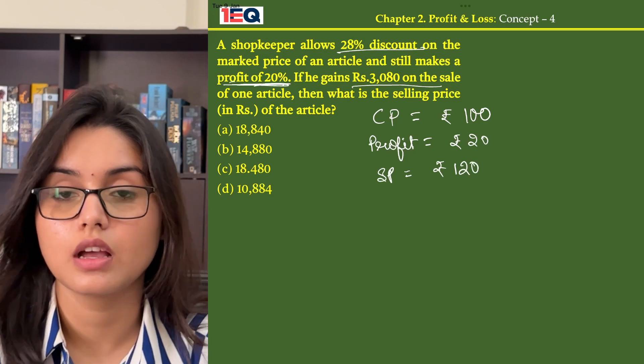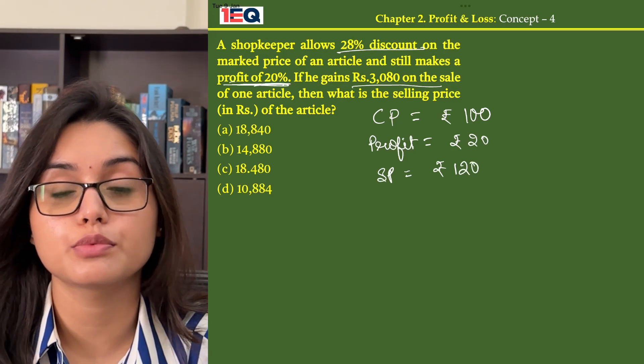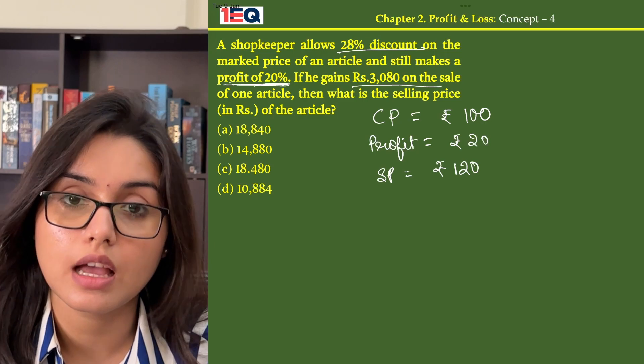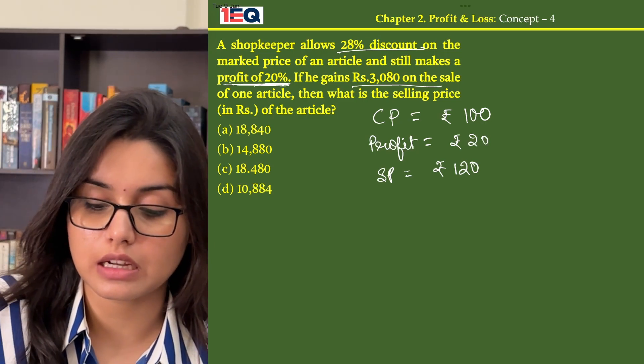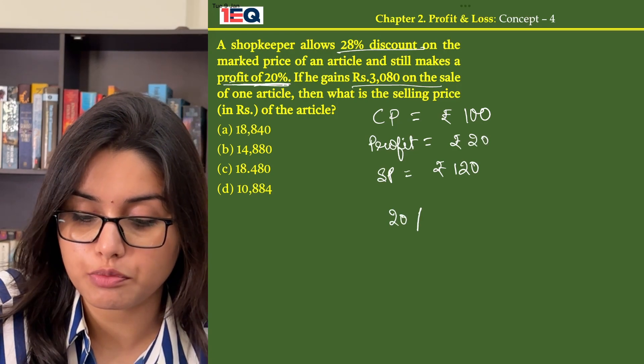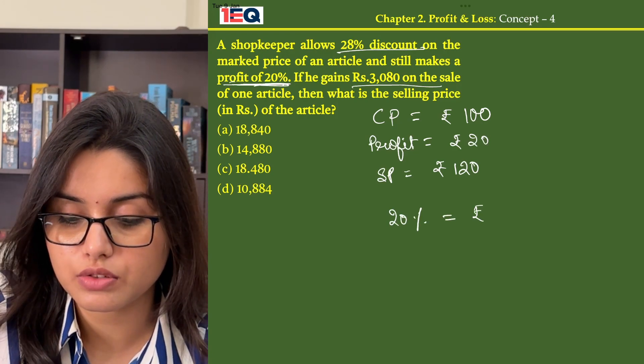Now given in the question, we know the profit percentage is 20% and the amount of gain is rupees 3,080. That means 20% of profit is equals to rupees 3,080.